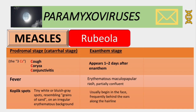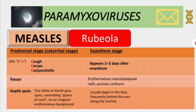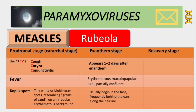This rash usually begins from the face, frequently from behind the ears along the hairline, and descends from the head moving down to the extremities. In most cases it spares the palms and the soles. The last stage is the recovery stage, characterized by cough, which can persist for about one week and can actually be the last remaining symptom.